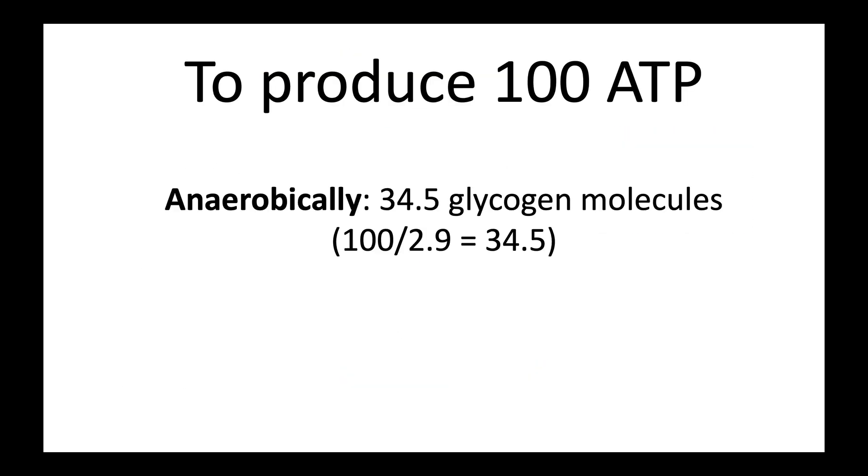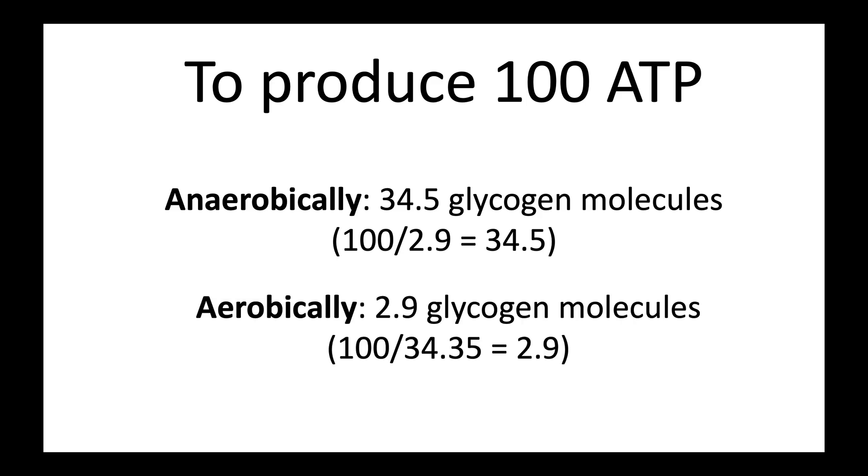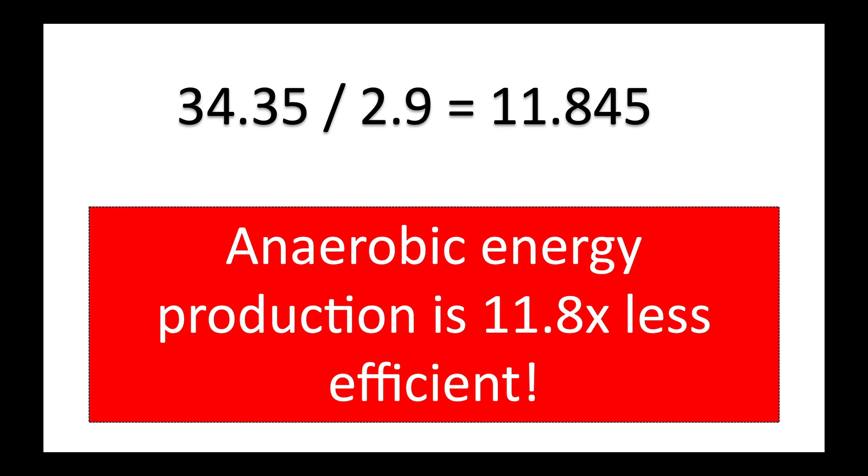So thinking back to this picture, to produce 100 ATP from the anaerobic system, we need 34.5 molecules of glycogen. To produce the same amount of energy from the aerobic system, we only need 2.9 molecules. So what we can say is that anaerobic energy production is 11.8 times less efficient. This then can explain why we can burn through nearly half of our muscle glycogen in 30 seconds. The anaerobic system is expensive, but energy can be produced very quickly.